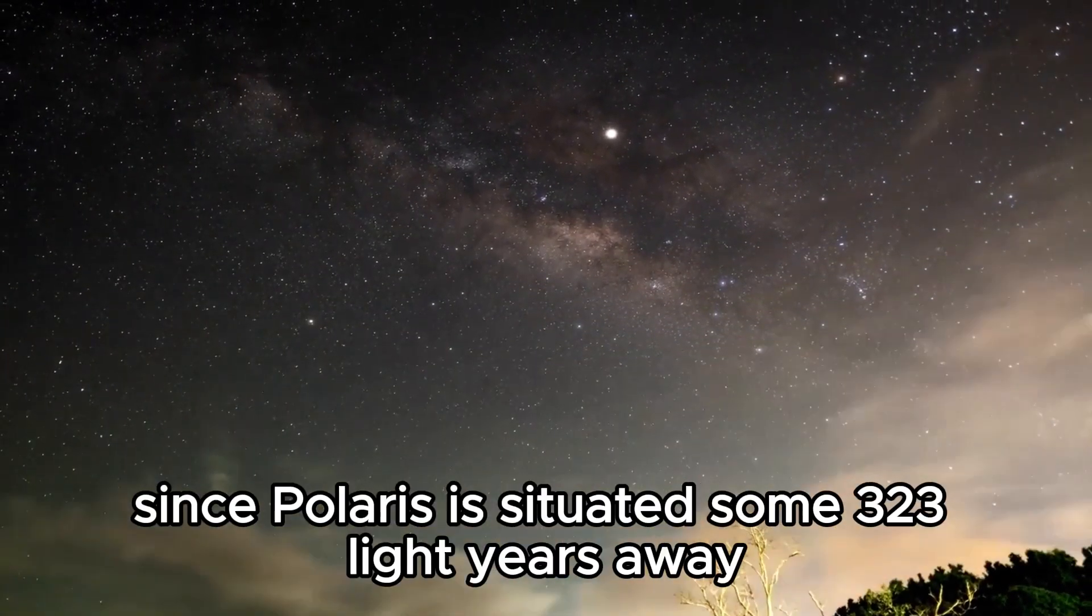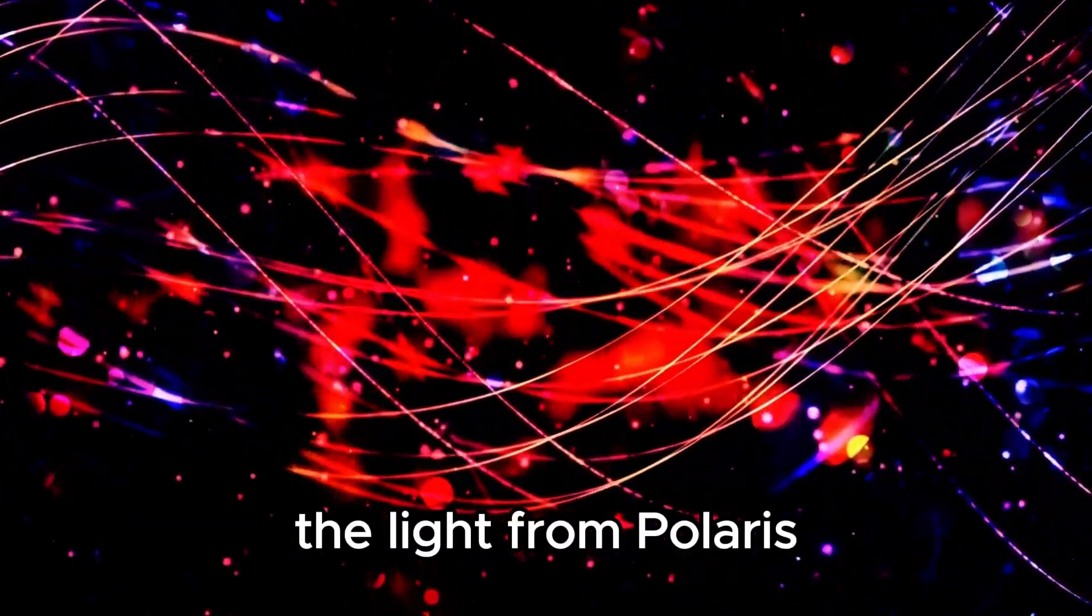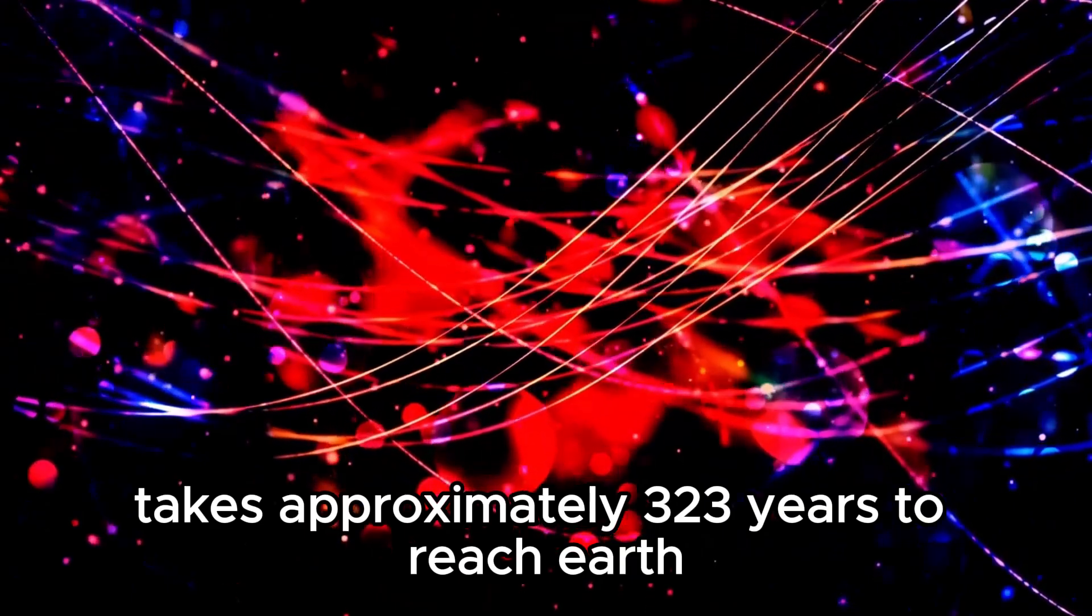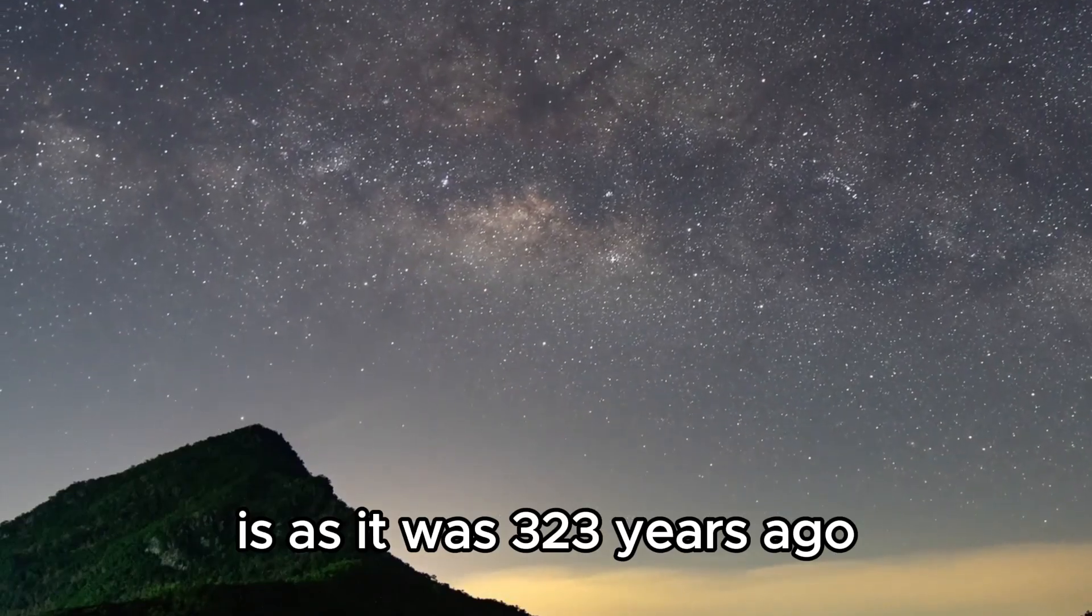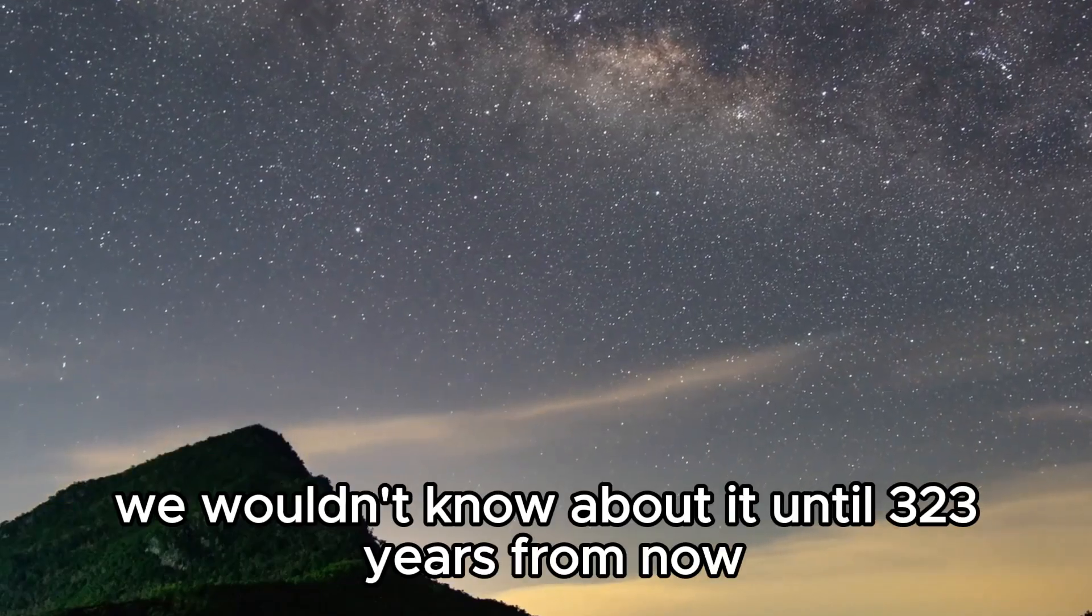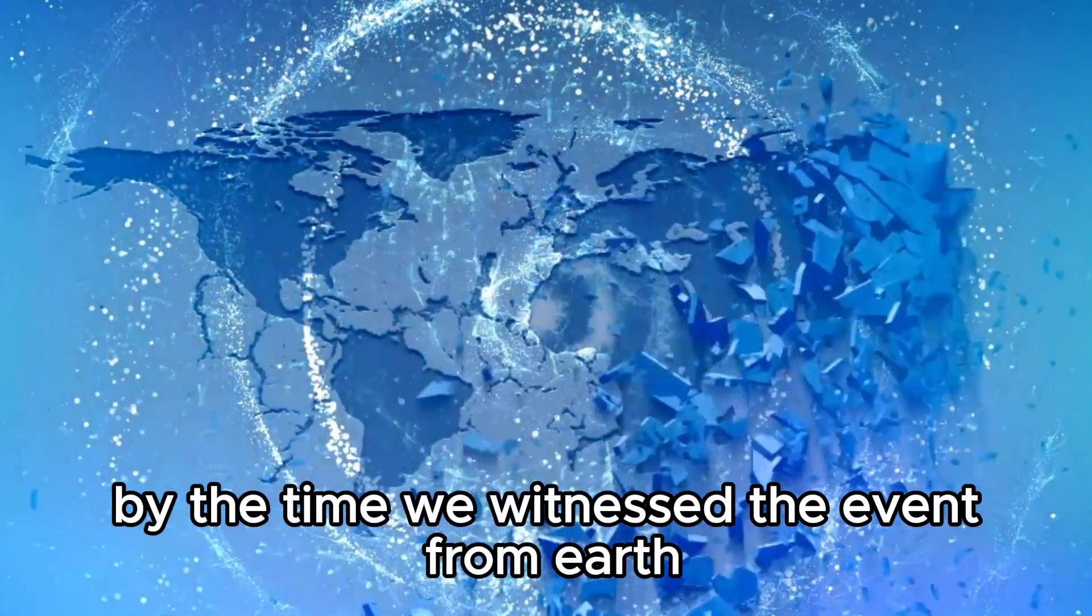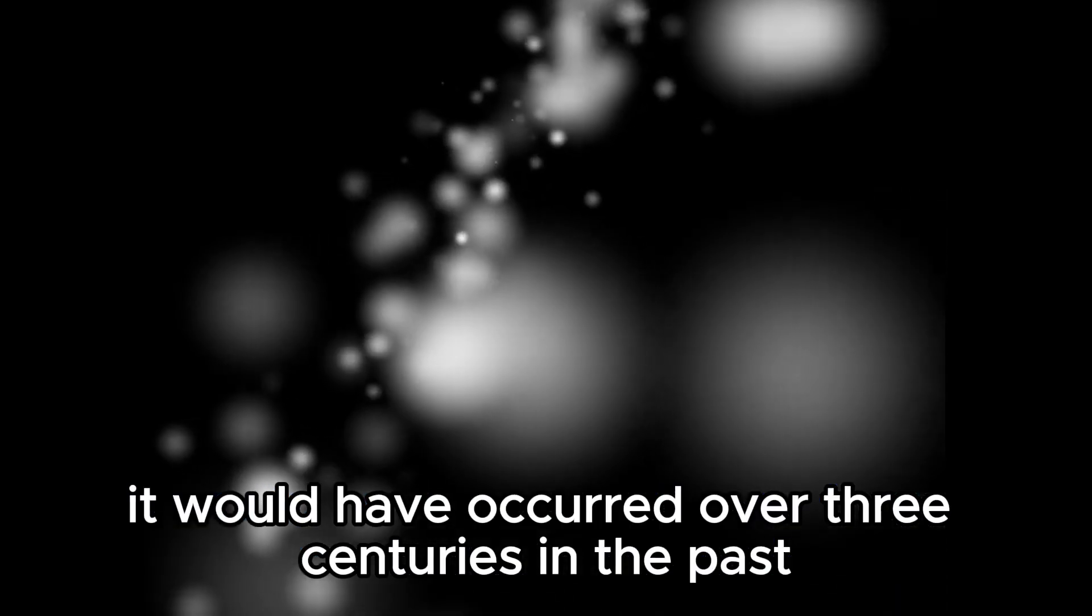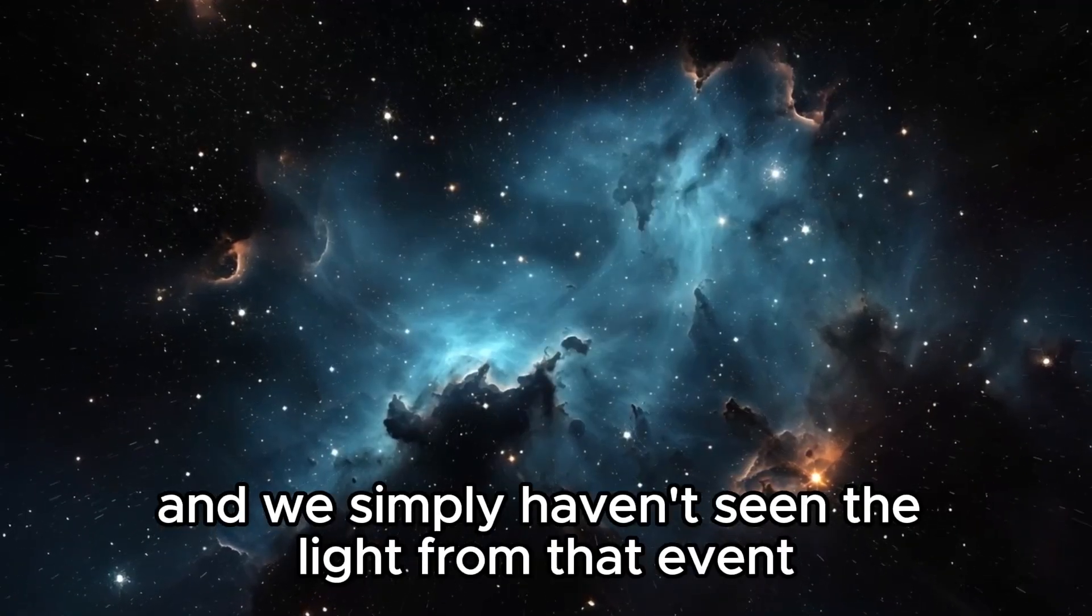What we do know is that since Polaris is situated some 323 light-years away, the light from Polaris takes approximately 323 years to reach Earth. This means that the light we currently see from Polaris is as it was 323 years ago. Given the distance, if Polaris were to explode today, we wouldn't know about it until 323 years from now. By the time we witnessed the event from Earth, it would have occurred over three centuries in the past. Of course, the predictions made by scientists are based on the empirical evidence we see right now, which means that Polaris could have already exploded and we simply haven't seen the light from that event yet.